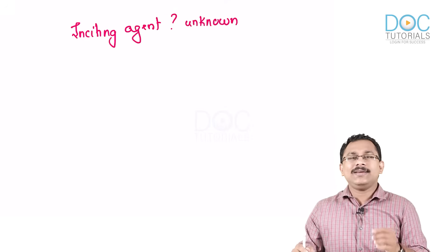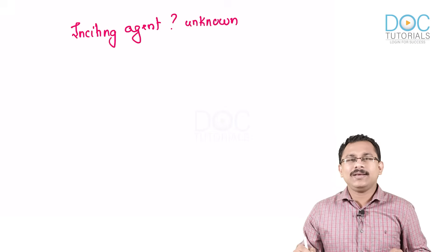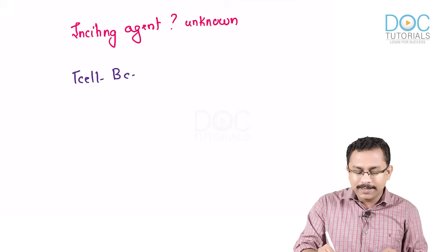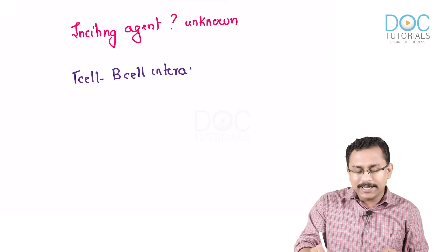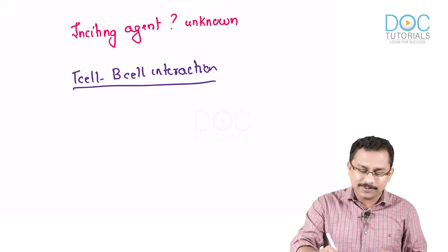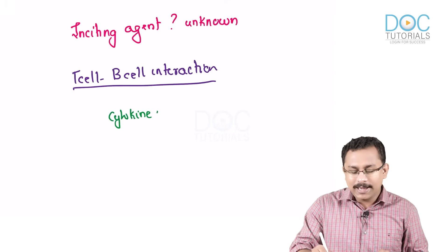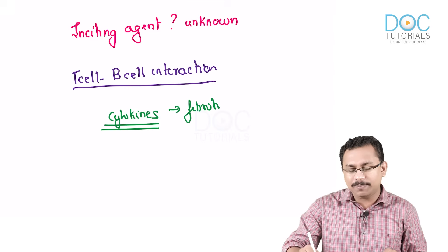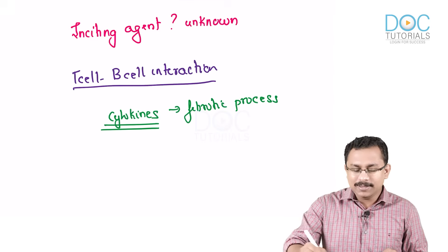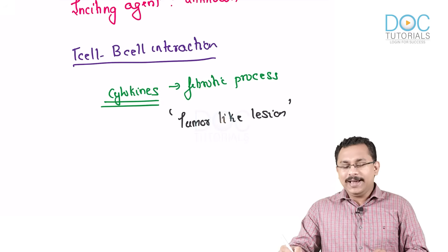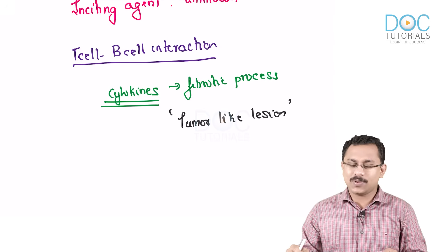What happens is that as a result of exposure to some triggering factor, there occurs a T cell–B cell interaction. And this T cell–B cell interaction results in the production of various cytokines, which can trigger a fibrotic process resulting in tumor-like lesions — not actual tumors, but tumor-like lesions — that can occur in various organs.